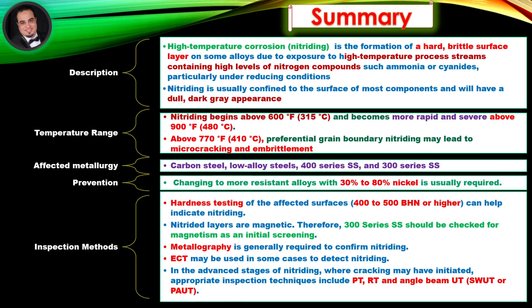Summary — Description: High temperature corrosion nitriding is the formation of a hard, brittle surface layer on some alloys due to exposure to high-temperature process streams containing high levels of nitrogen compounds such as ammonia or cyanides, particularly under reducing conditions. Nitriding is usually confined to the surface and will have a dull, dark grey appearance. Temperature range: Nitriding begins above 600°F and becomes more rapid and severe above 900°F. Above 770°F, preferential grain boundary nitriding may lead to microcracking and embrittlement.